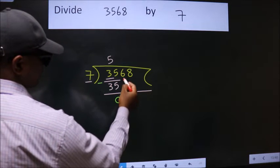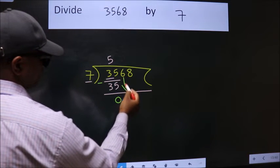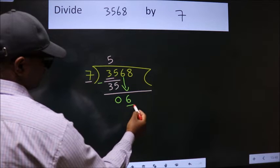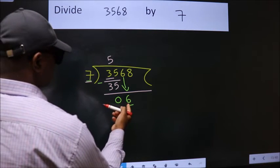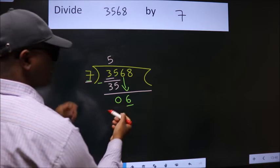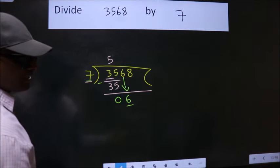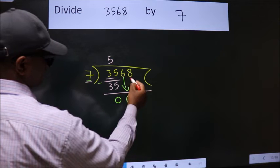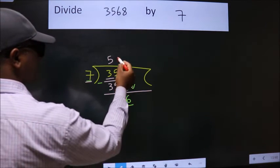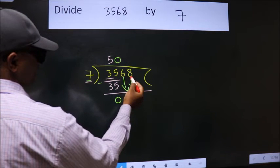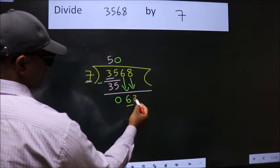After this bring down the beside number. So 6 down. Here we have 6. Here 7. 6 is smaller than 7. So we should bring down the second number. And the rule to bring down second number is put 0 here. Then only we can bring down this number.